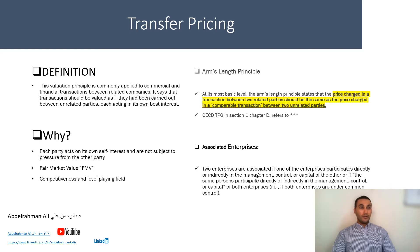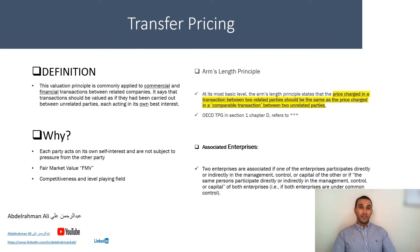That transaction should be valued as if the transaction is happening between unrelated parties. In simple words, the transfer price of a commodity or service should be the same exact price as it would be between independent enterprises, in comparison with dependent or related parties.